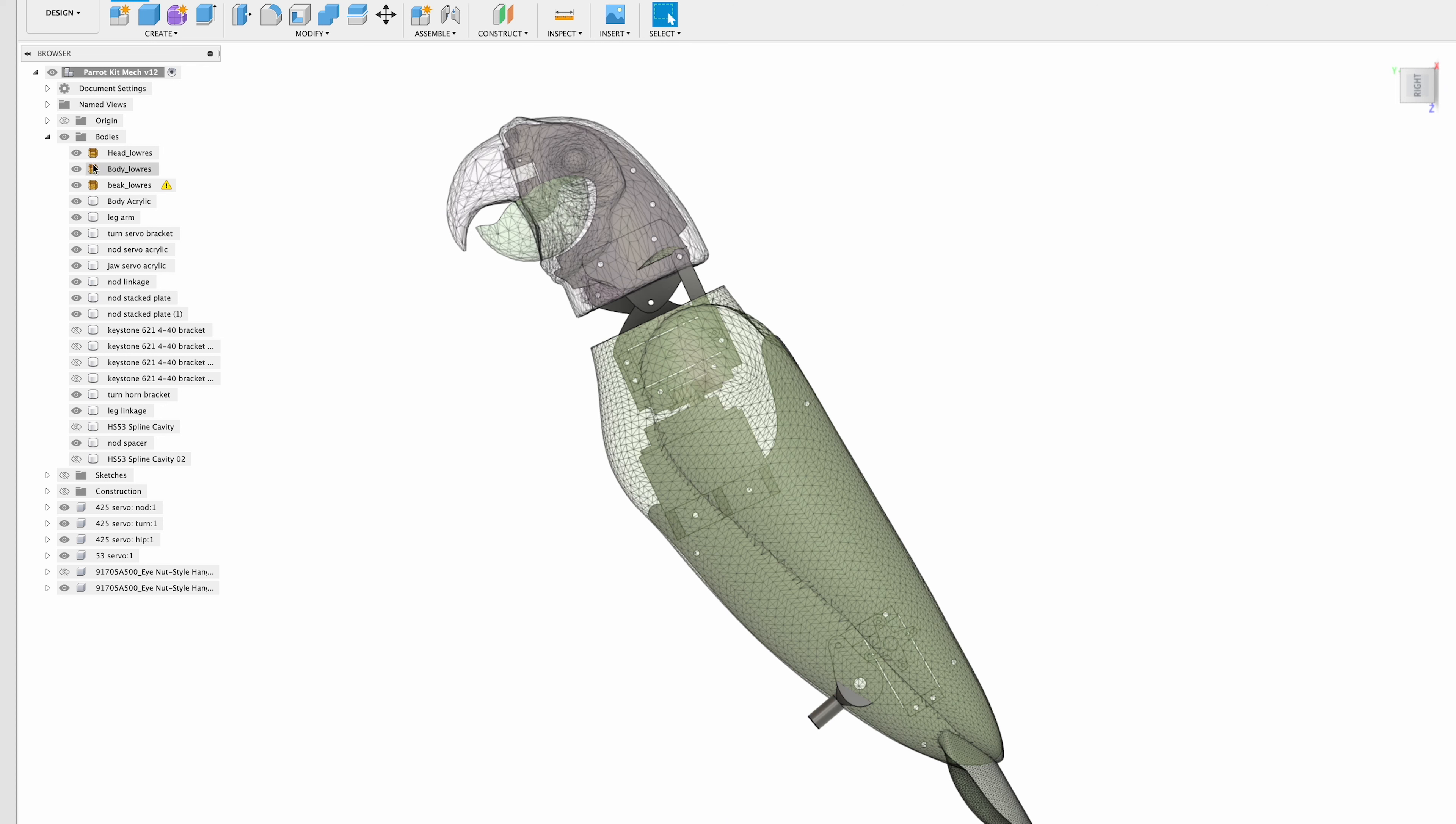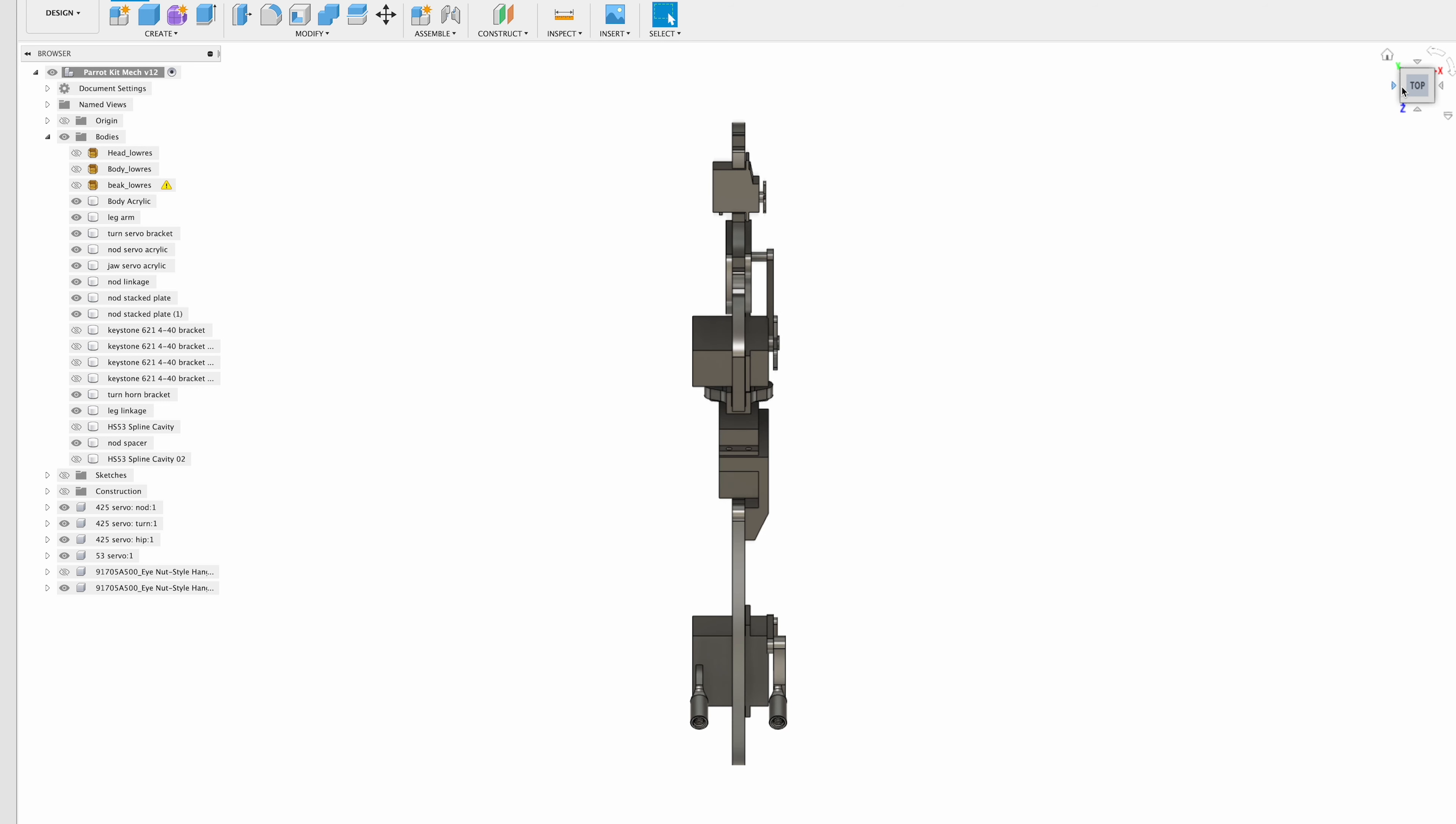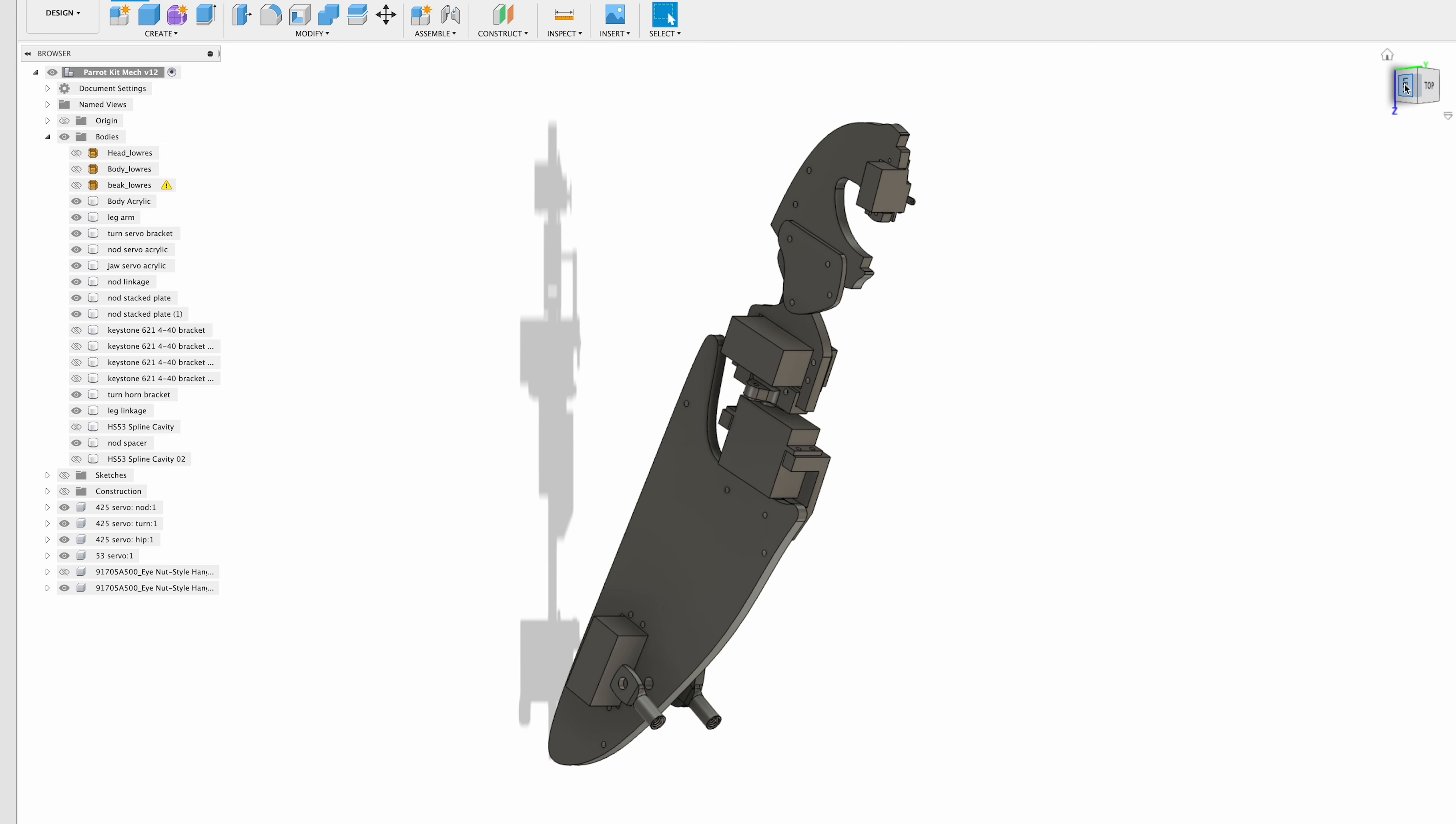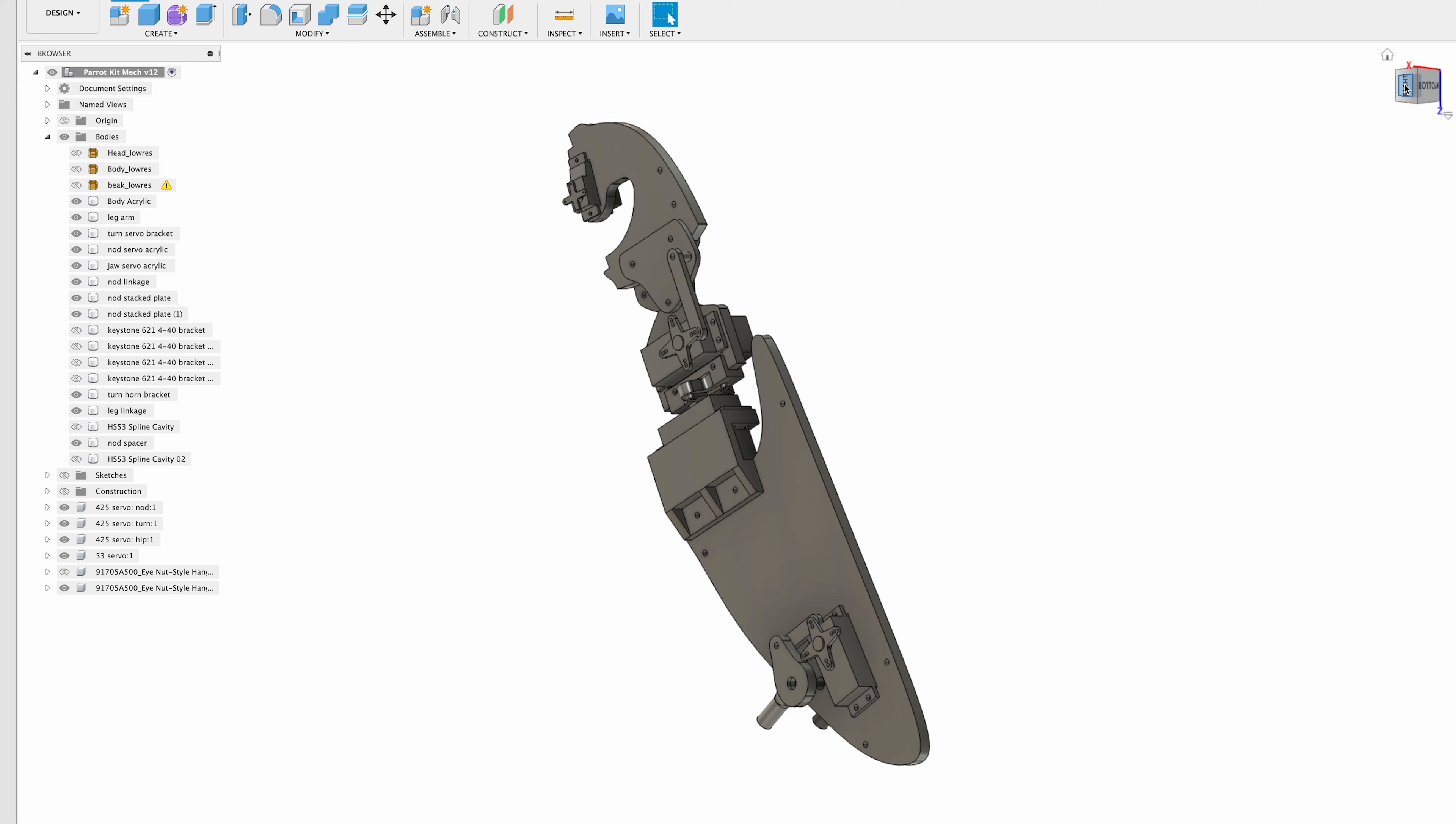I took the 3D model of the bird that I made in the last video and brought it into Fusion 360, which is an engineering design program. You can get very specific with the dimensions and the relationships between parts, and from there I built out all the mechanical components inside the volume of the sculpture.